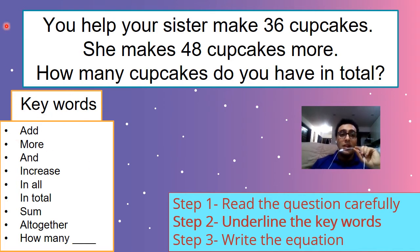Hmm. So we are done with number 1. Step 1 is finished. But let's read it one more time so we can understand what's happening. You help your sister make 36 cupcakes. Okay. 36 cupcakes me. She makes 48 cupcakes more. Okay. So 48 cupcakes she made and 36 I made. So how many do you make together? Now, step 2 is that you have to underline the keywords. These are the keywords. Add. It comes from addition. More. Oh, we have more.